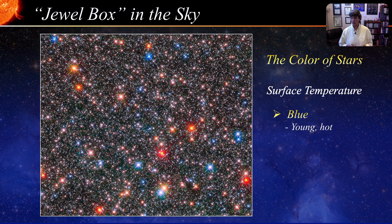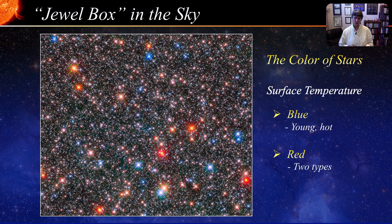Red stars come in two types: red dwarfs and red giants. Red dwarf stars have a temperature of about half of our sun and consume their fuel very slowly, therefore living very long lives. Red giant stars are stars approaching the end of their lives — some will die quietly as a white dwarf, while others will die violently in an explosion known as a supernova. Our sun is a yellow star; in about five billion years it will evolve into a red giant, then quietly fade away as a planetary nebula and a white dwarf.